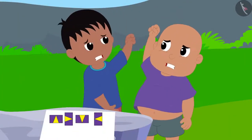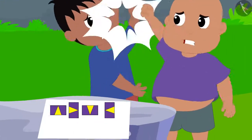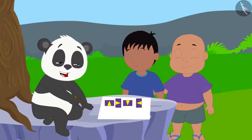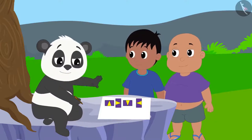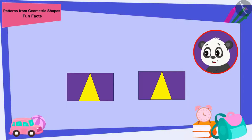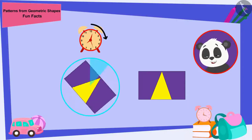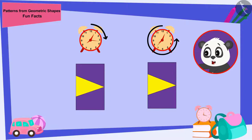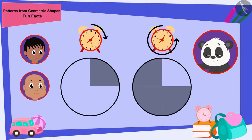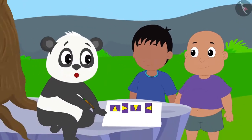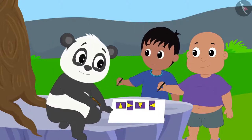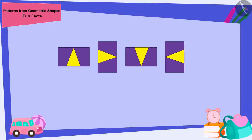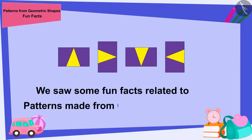Raju and Bablu started quarreling. They both feel that the rule which they found is correct. Don't fight, friends. You both found the right rule. It is exactly one quarter in the clockwise direction and three quarters in the anti-clockwise direction — both of you have found the correct rule, Golu said. Raju and Bablu understood and the three friends started playing together. Children, in this video, we saw some fun facts related to patterns made from geometric shapes.